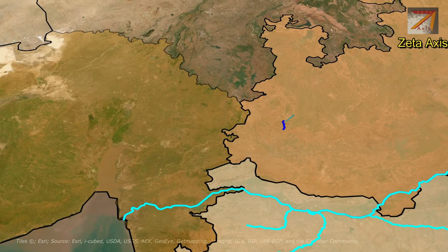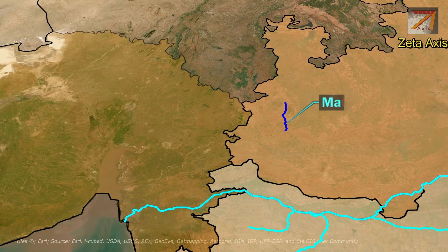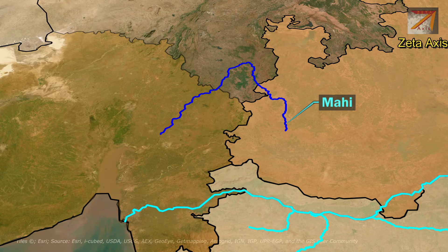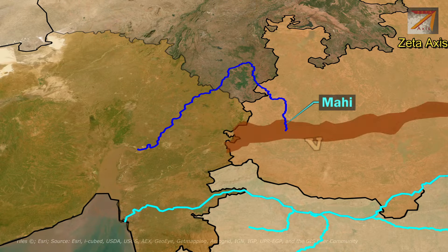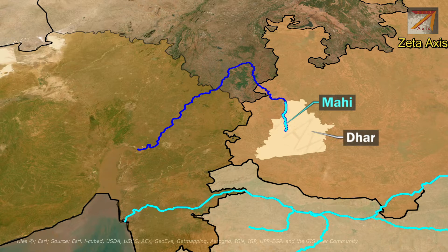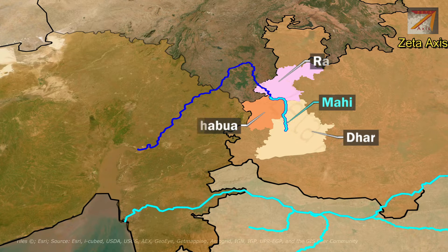The next river is Mahi River, which is also a west-flowing river originating from Madhya Pradesh. The Mahi River enters Rajasthan and then flows through Gujarat before draining into the Gulf of Khambhat. The Mahi River originates in the western Vindhya range in Dhar district of Madhya Pradesh. After its origin, it flows in the northern direction through Jhabua and Ratlam districts.